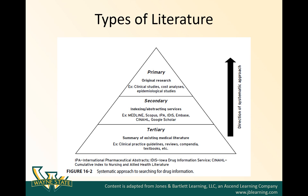Here's a really important figure from the textbook demonstrating the three different types of literature categories. At the top of the pyramid we have primary literature, which consists of original literature — clinical trials, cost analyses, epidemiological studies, and other observational studies. The next level is secondary literature, which consists of indexing or abstracting services such as Medline, Scopus, and Google Scholar — databases where you might search for primary literature. Tertiary literature at the bottom of the pyramid is more of a summary of existing medical literature, whereas primary literature is very focused on a particular research study.